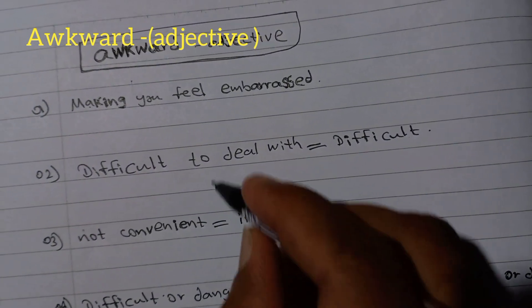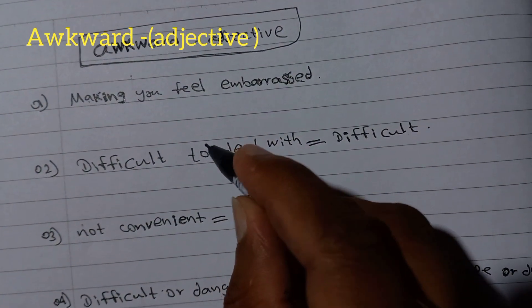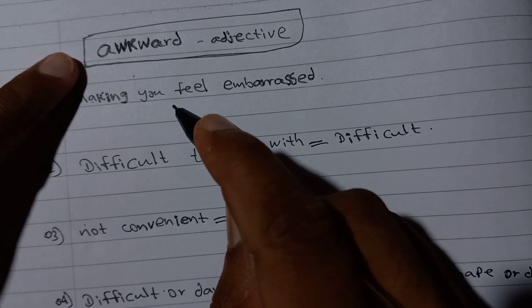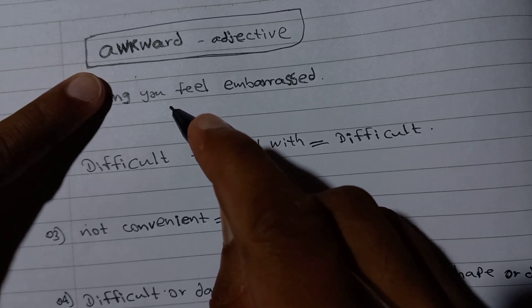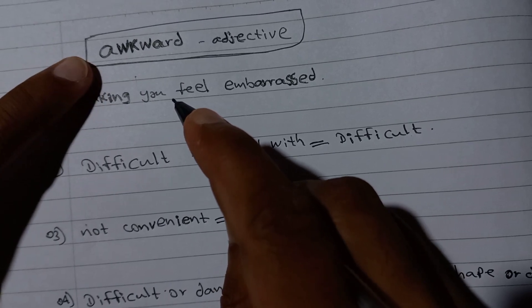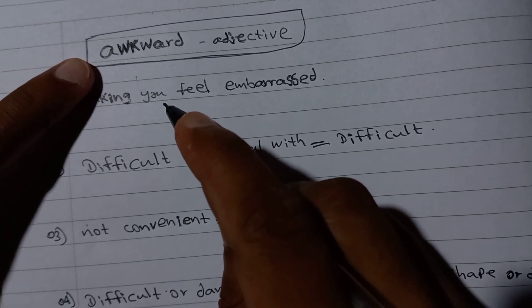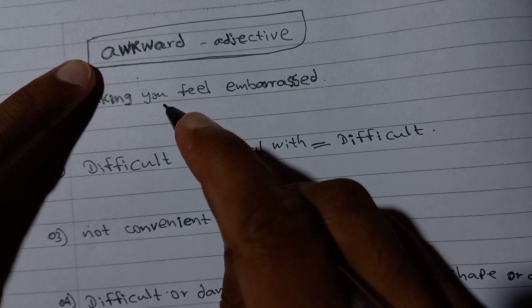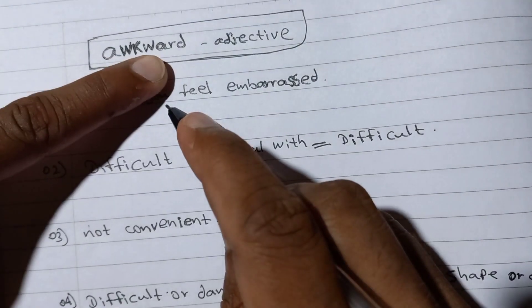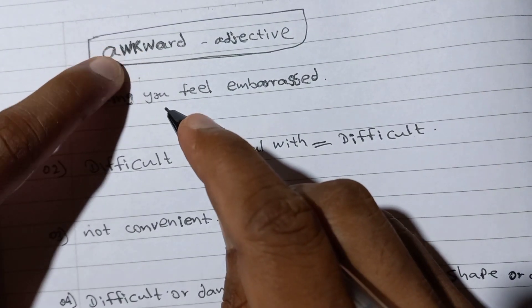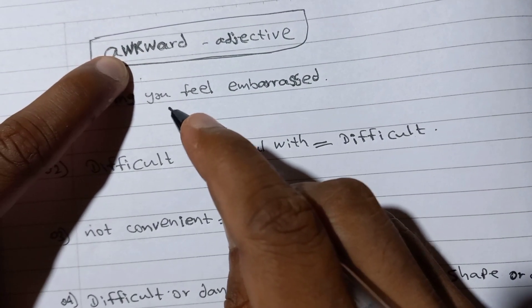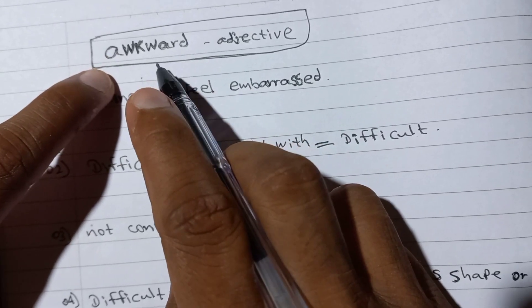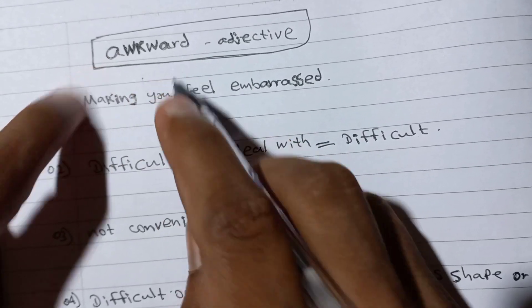Awkward. Awkward is an adjective. Actually, there is a W letter, but we don't pronounce it. We pronounce it as awkward. The first W and the R are silent. Awkward.